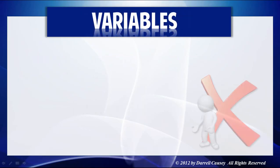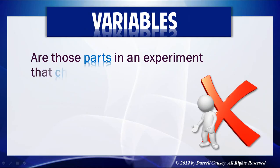In order to put the experiment together, you've got to decide what your variables are. The variables are those parts of the experiment that change. If you're really going to have a good experiment, you're going to have one variable. If you have more than one independent variable, you want to design more experiments.